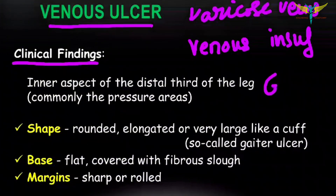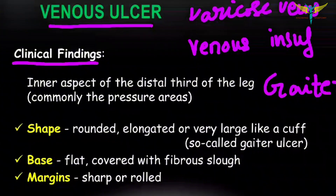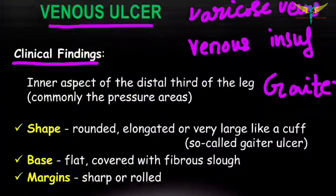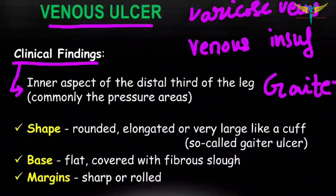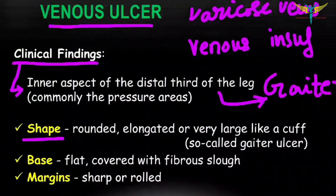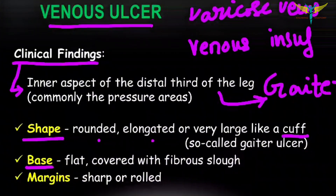The gaiter zone is the inner aspect of the medial malleolus. So the venous ulcer is found in the inner aspect of the distal third of the leg. The shape is rounded, elongated, or cuff-like. The base is flat and covered with a fibrous lobe.